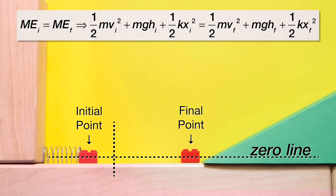Therefore: one half mass times velocity initial squared plus mass times the acceleration due to gravity times the initial height plus one half times the spring constant times the initial displacement of the spring squared equals one half mass times the velocity final squared plus mass times the acceleration due to gravity times the final height plus one half times the spring constant times the final displacement of the spring squared.